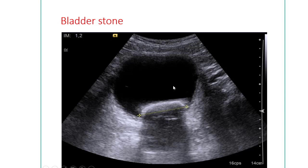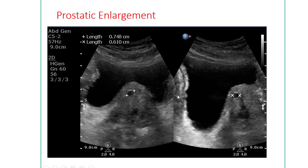This is prostatic enlargement, or benign prostatic hyperplasia (BPH), which can easily be identified by ultrasonography. The prostate is enlarged and protrudes into the bladder — this is called intravesical protrusion (IPP) — and this can easily be identified by ultrasonography.